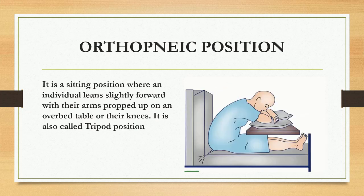Next one is orthopneic position. It is a sitting position where an individual leans slightly forward with their arms propped up on an overbed table or their knees. It is also called tripod position.